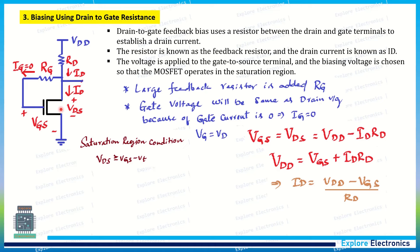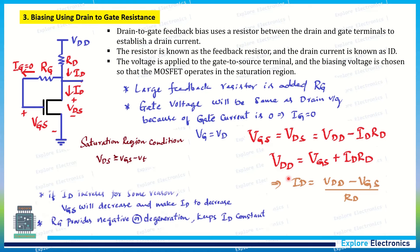If ID increases for any reason such as temperature variation, VGS is variable and will decrease accordingly — and since VGS decreasing causes ID to decrease, the current returns to its original value. The resistance RG provides negative feedback, also called degenerative feedback, which keeps ID at a constant value and ensures the transistor remains stable as an amplifier.